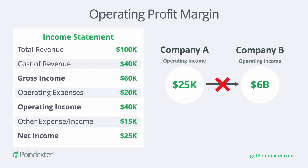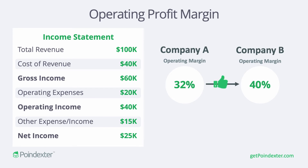Instead, if we use operating margin we can compare both businesses on an apples-to-apples basis, removing the scale from the equation and instead focusing only on how efficient both companies are at producing operating income.